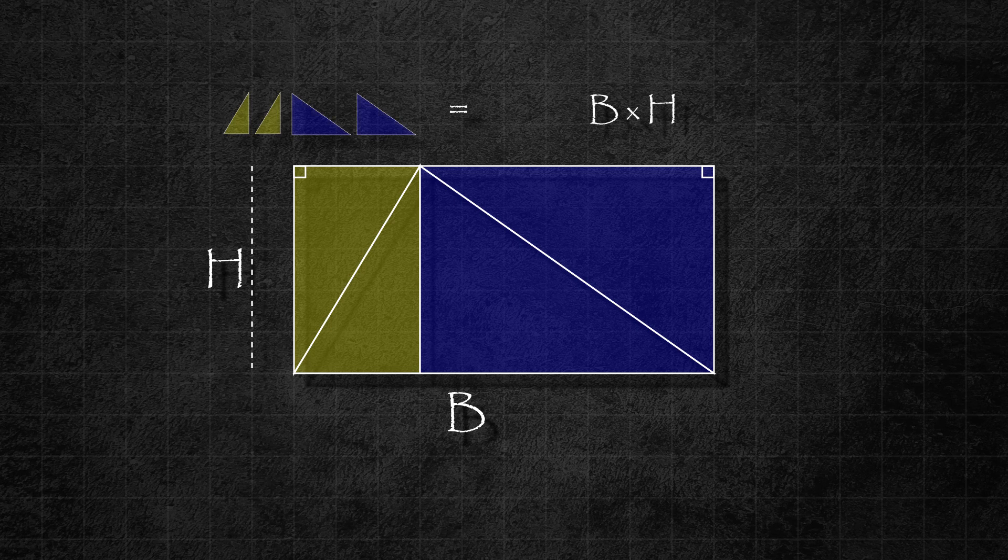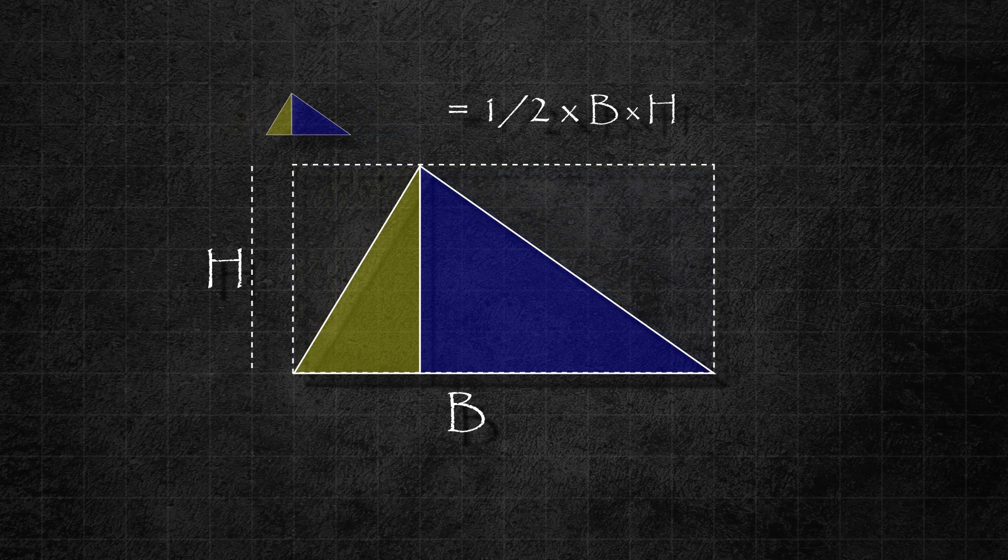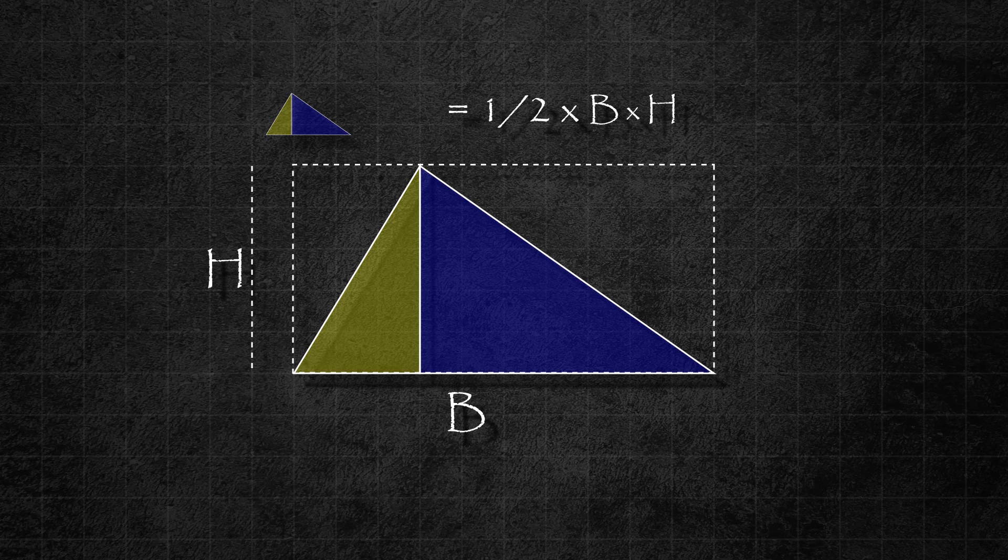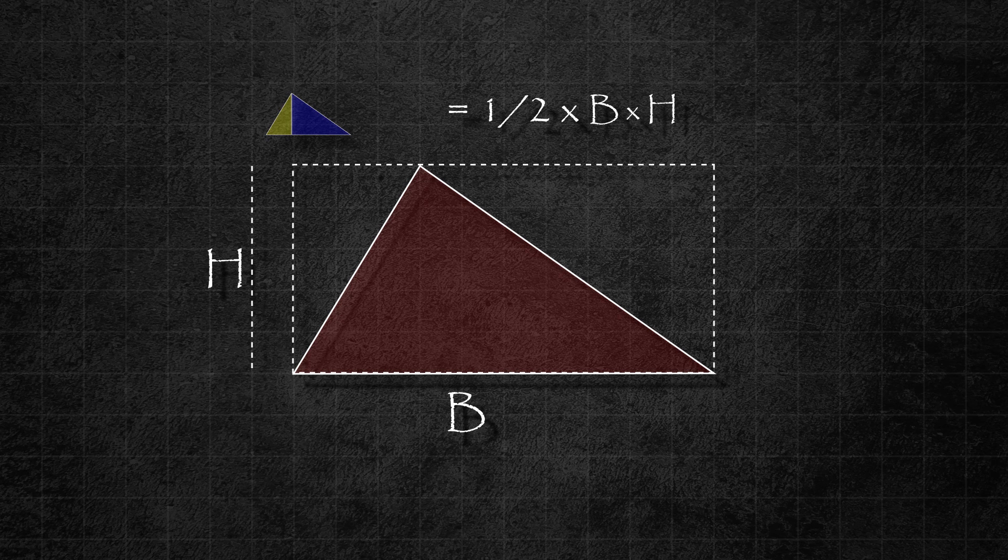Thus the combined area of two yellow and two blue triangles is b times h. If we have only one yellow and one blue triangle, then their combined area must be half of the area of the rectangle, which implies that the area of the red triangle must be half times b times h. Notice that the formula is the same for acute triangles and right angle triangles.